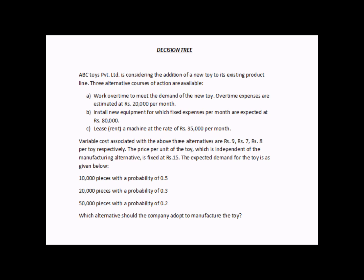The variable cost associated with the above three alternatives are rupees 9, rupees 7, and rupees 8 per toy respectively. So if they choose option A — work overtime — the variable component is rupees 9 per toy. For option B, the variable component is rupees 7 per toy, and for option C the variable cost is rupees 8 per toy.